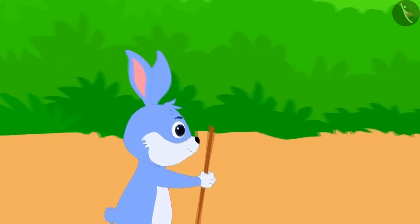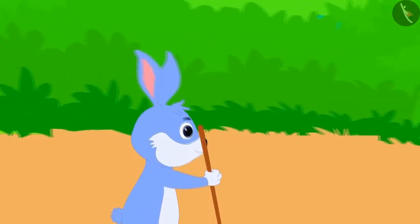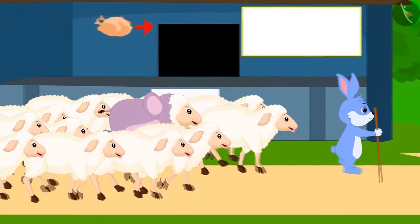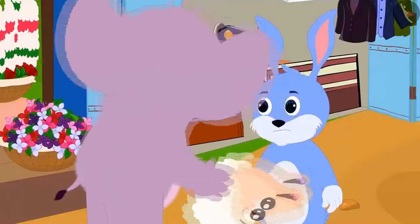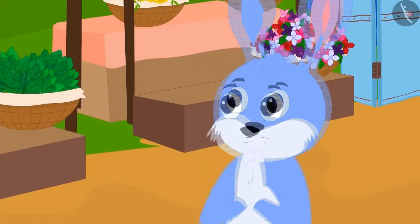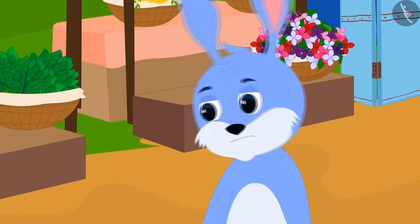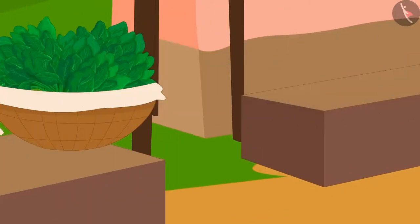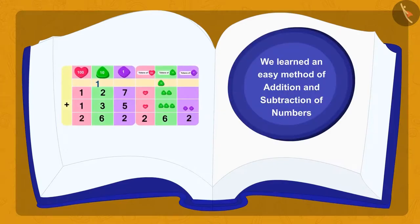Next week, when Bunny came to take the sheep, Appu hid amongst the sheep. Appu caught him red-handed as soon as Bunny came to the market to sell the sheep. Bunny apologized to Appu and returned all the money he got by selling his sheep. Today in this lesson, we learned an easy method of adding and subtracting numbers.